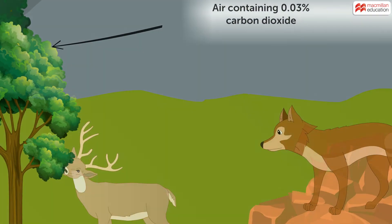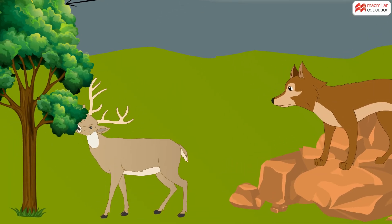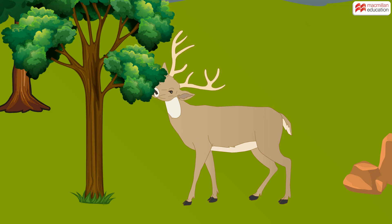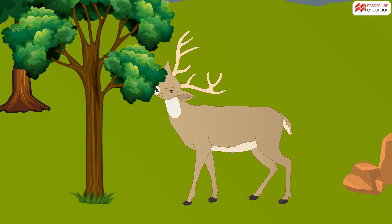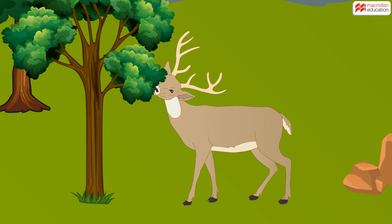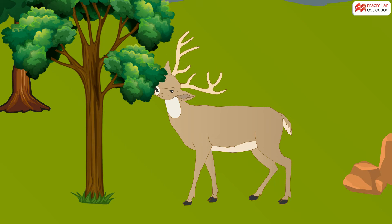When the plant is eaten by herbivores, such as a deer, it is digested in the alimentary canal. The carbon from the carbon dioxide taken into the plant has been made into carbohydrates, proteins, and fats in the deer's tissues.